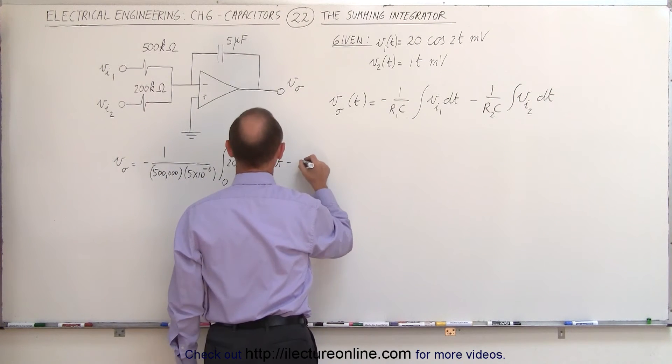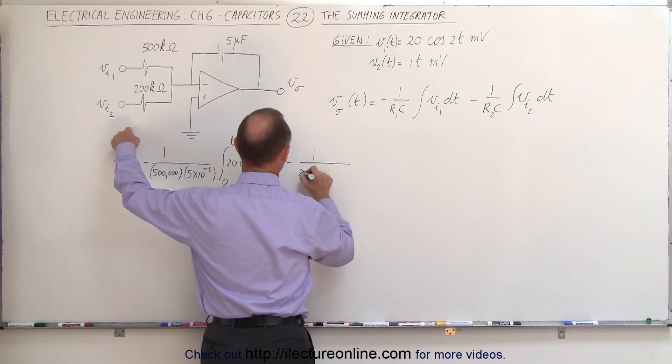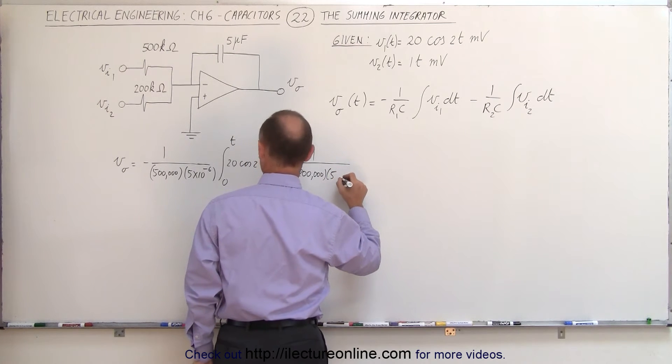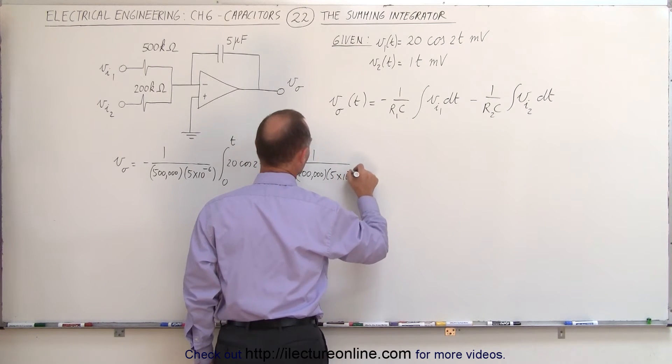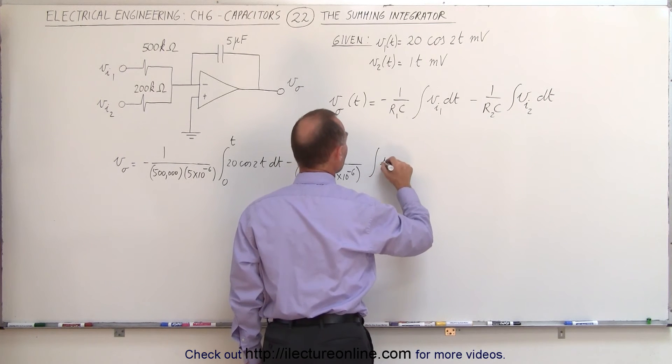minus 1 over the resistance, which is 200 kilohms, times 5 times 10 to the minus 6, and then we integrate that times the input voltage, which is t times dt from 0 to t.